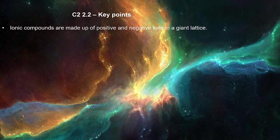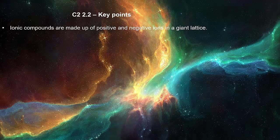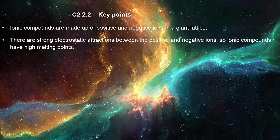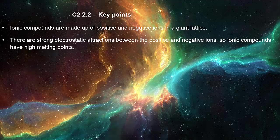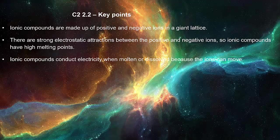Ionic compounds are made up of positive and negative ions in a giant lattice. There are strong electrostatic attractions between the positive and negative ions. So ionic compounds have high melting points. Ionic compounds conduct electricity when molten or dissolved because the ions can move.